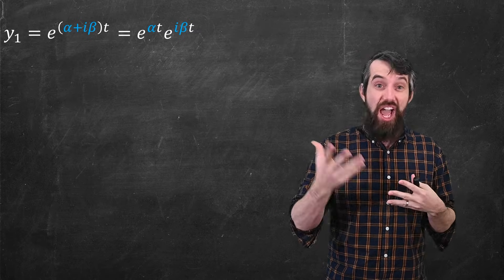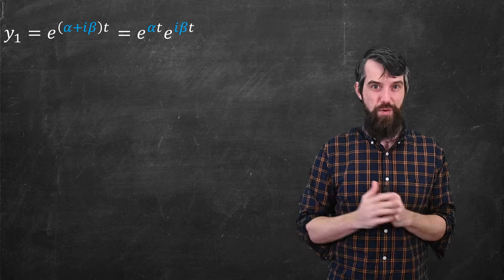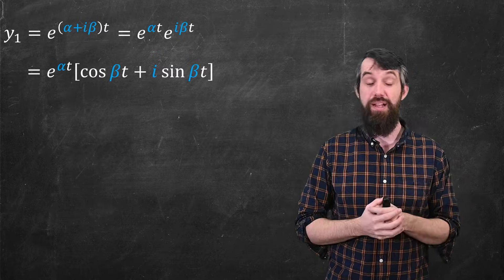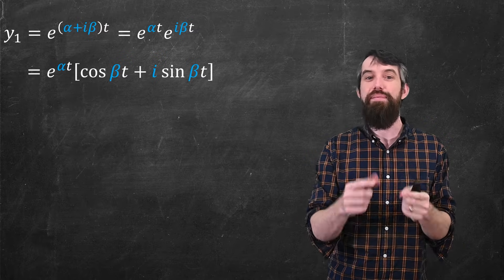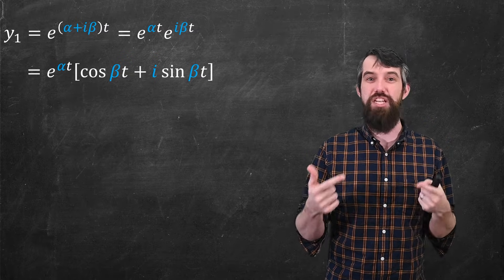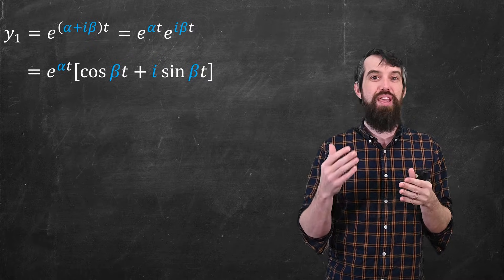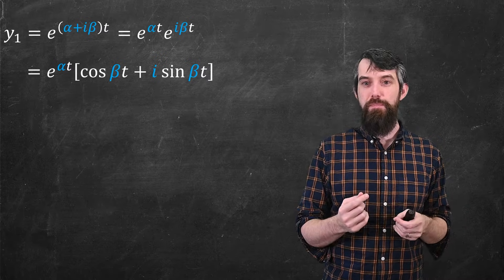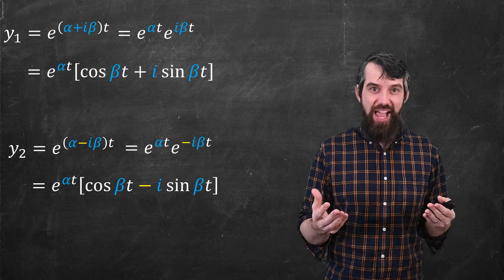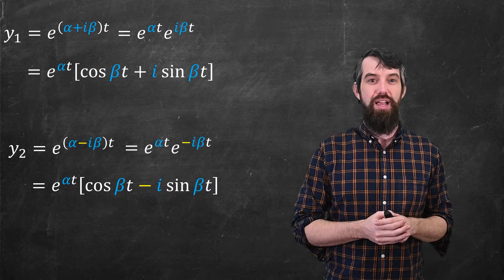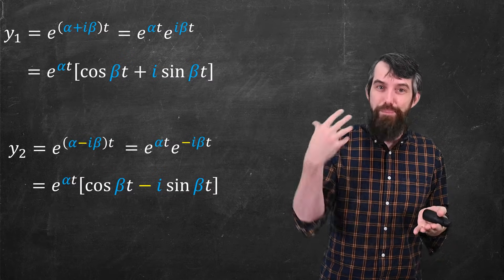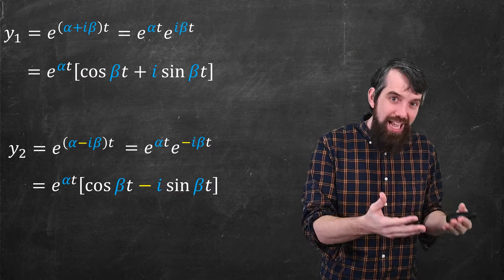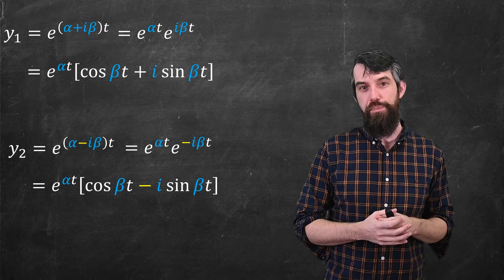What about e to the i beta t? Well, e to the i something, e to the i theta, should have an alarm bell because we have Euler's formula. Euler's formula tells us how to deal with e to the i times something. It's cosine of that something, in this case beta t, plus i times sine of beta t. And at the front, I've got e to the alpha t. That's just going to stick out front. We've used Euler's formula to turn the exponential with an imaginary argument into a cosine term and i times a sine term. That's my y1. I can do the exact same thing with the minus signs. It works basically the same way. The only difference is, because cosine is an even function, cosine of minus beta t is the same as cosine of beta t. But sine is an odd function, so sine of minus beta t is negative sine of beta t. That's why the negatives work out the way they do.